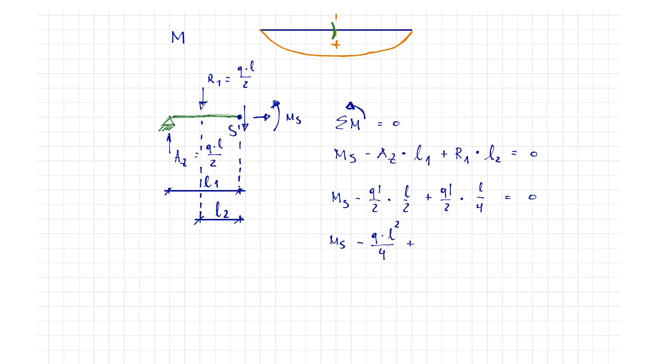If we continue to calculate, it results in M_S minus QL squared through 4 plus QL squared through 8 equals 0. We get M_S minus QL squared through 8 equals 0.